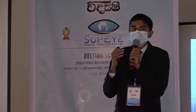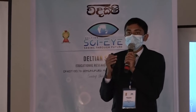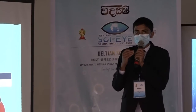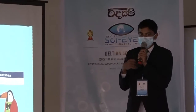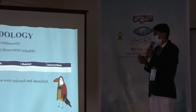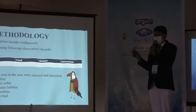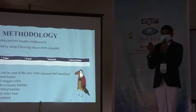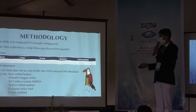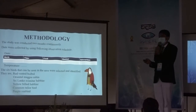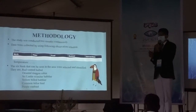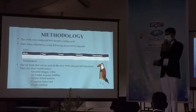I initially identified more than 30 bird varieties. I wanted to narrow these down, and as I had only two months, I selected six birds for my research. These are: Red-vented Bulbul, Oriental Magpie Robin, Sri Lanka Whistling Thrush, Timed Babbler, Yellow-billed Babbler, Common Tailor Bird, and Purple Sunbird.